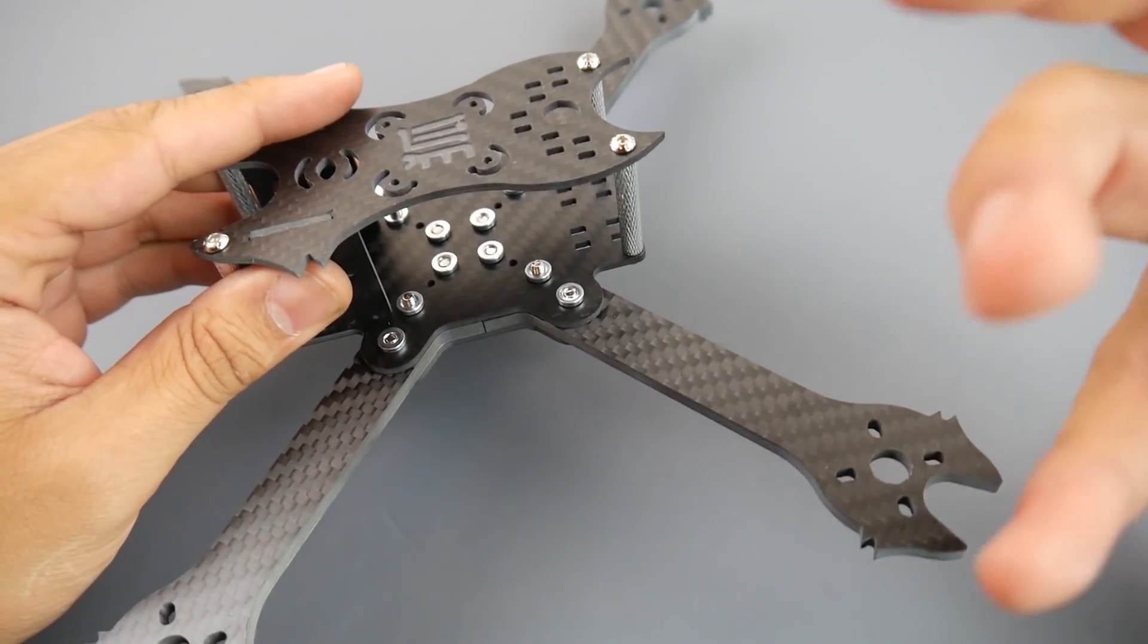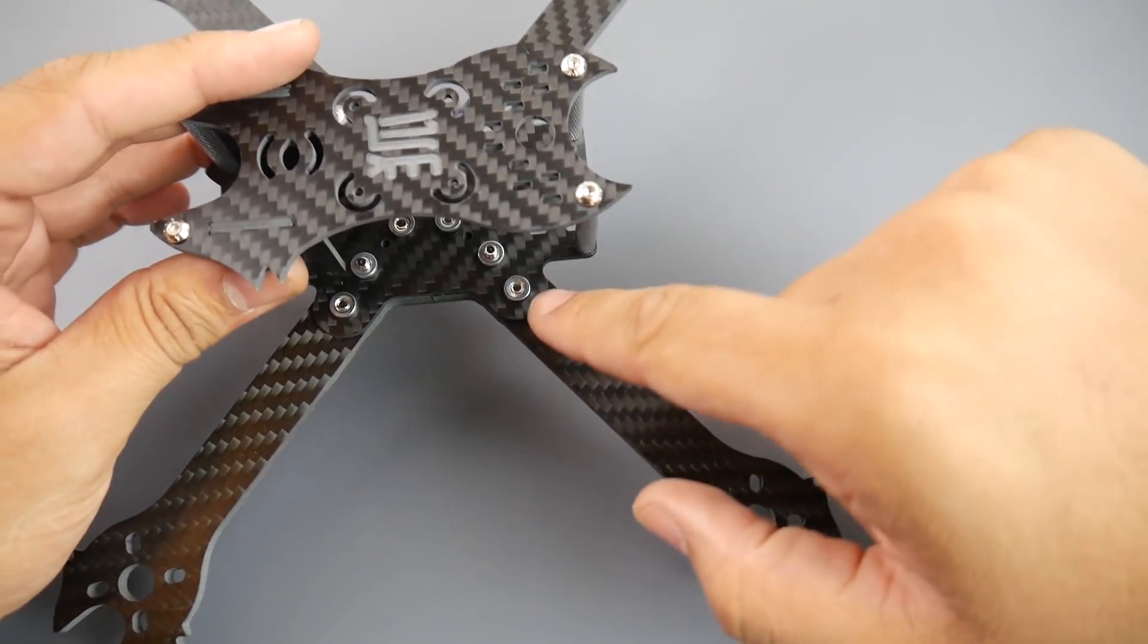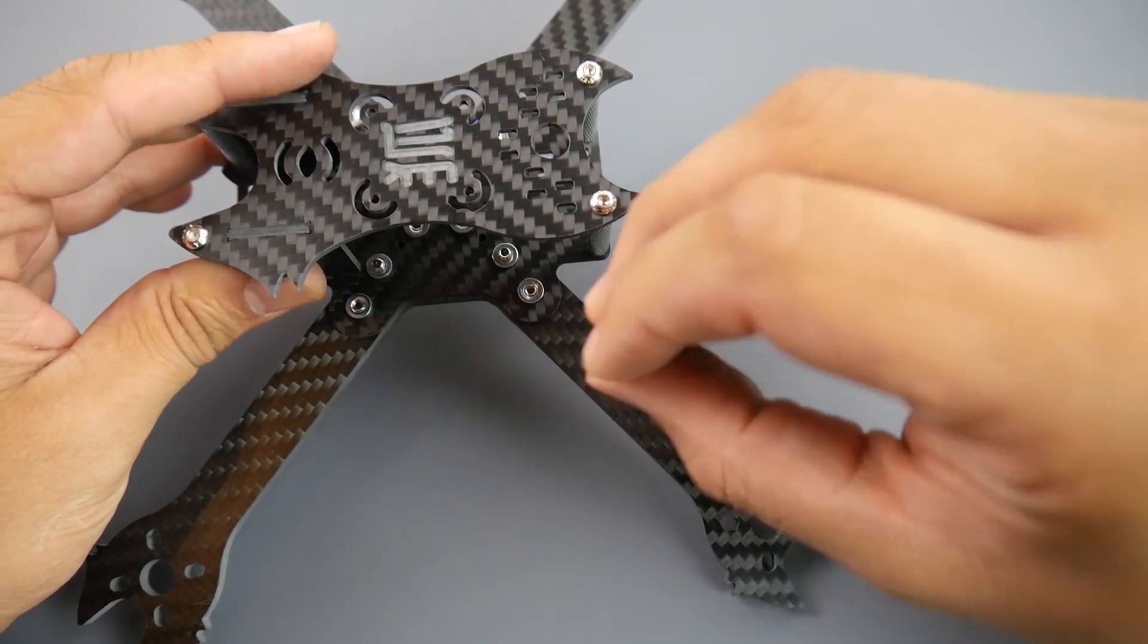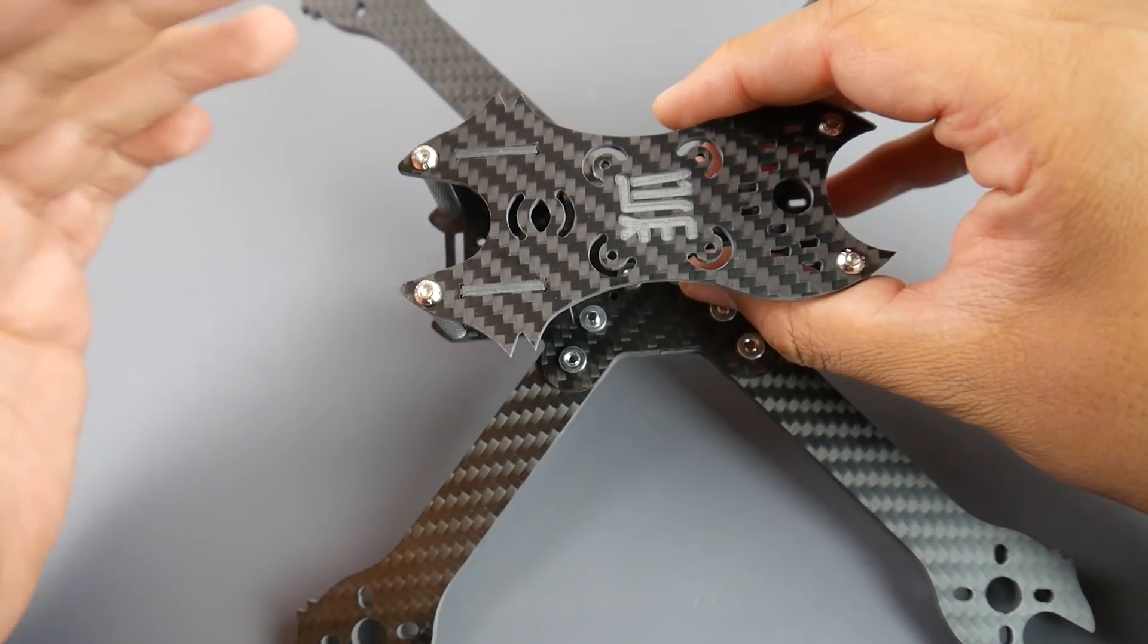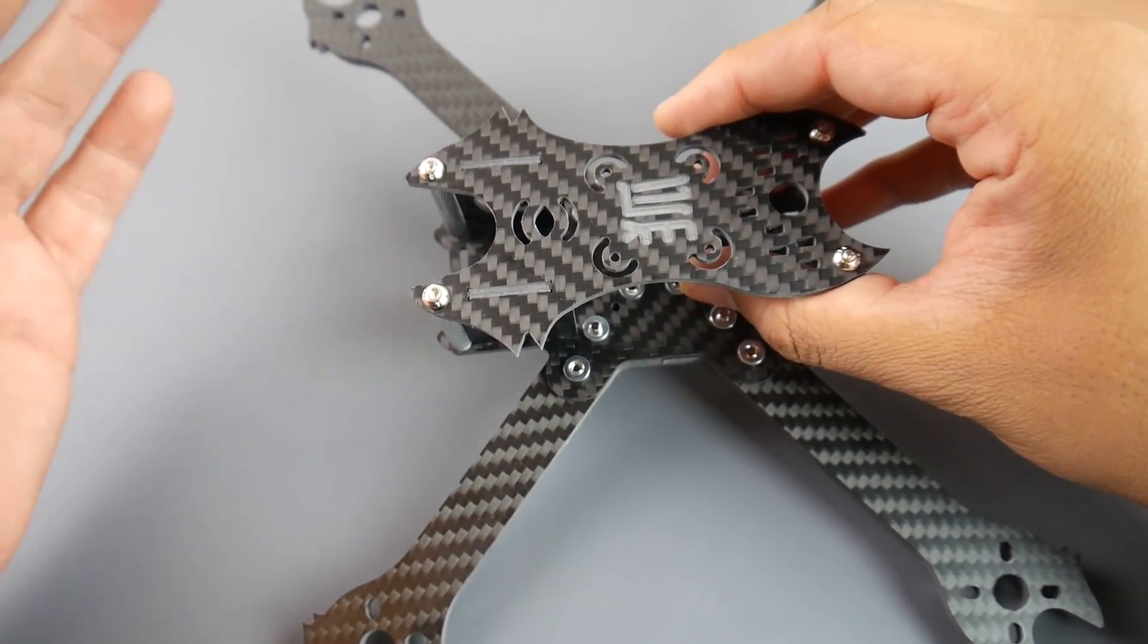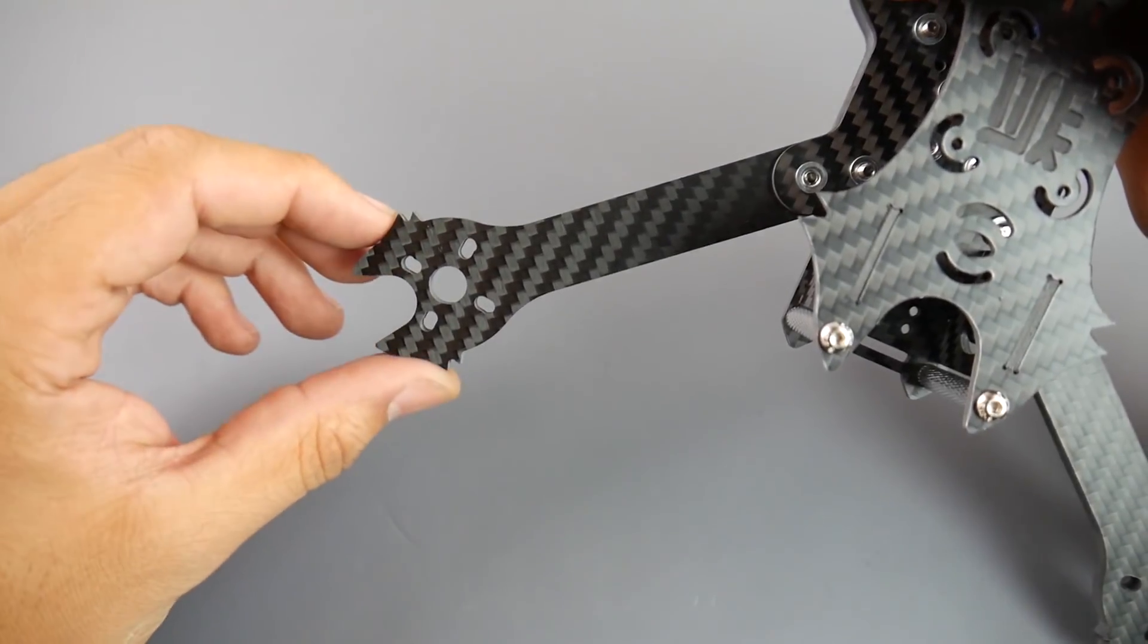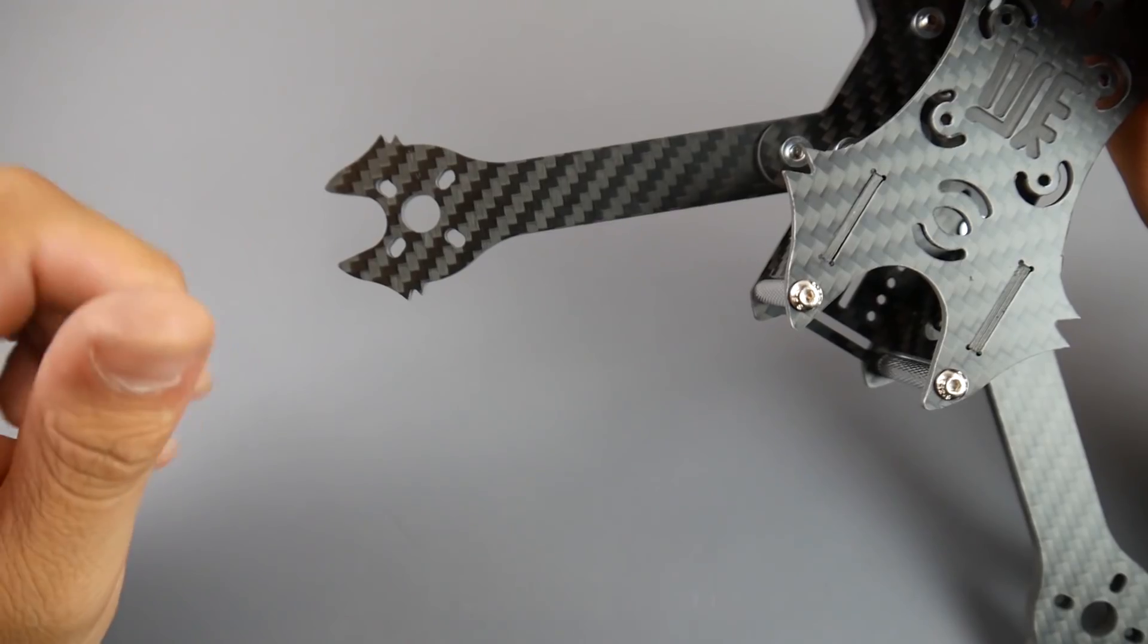When we take a look at the holes, they're very well spaced and there's nothing very close to the edge. The closest hole to an edge would be in the front here, but that's usually how it happens with these types of frames. If you take a look at the motor area, it looks pretty good. This might be a little weak spot here, but we don't know that until you actually take it out for a flight.